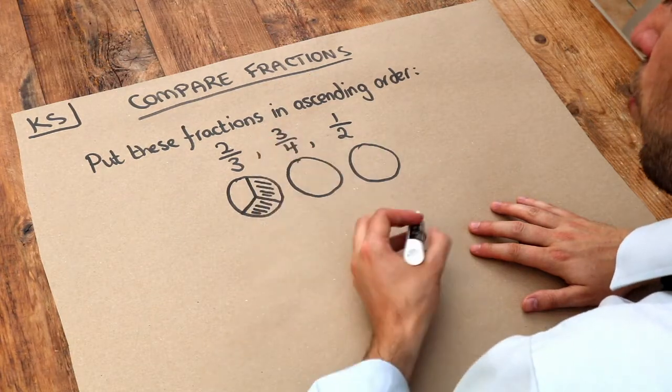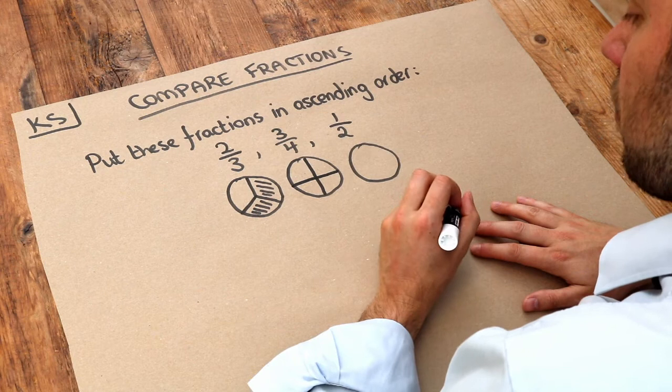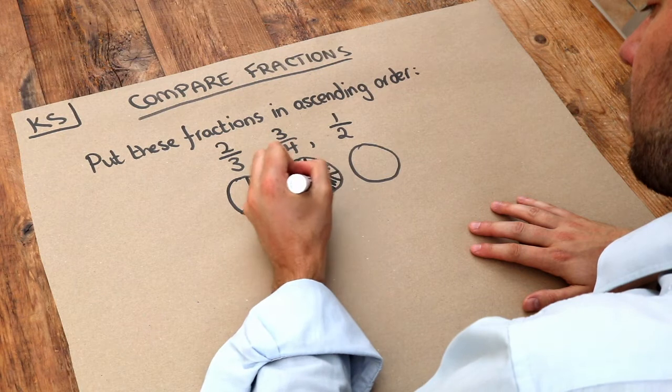This is three-quarters, so we split this into four, and of those quarters we want three of those quarters, so it would look like this if we were to sketch it.